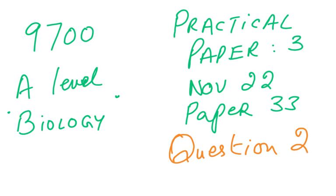Bismillah ar-Rahman ar-Rahim. We start 9700 A-level biology, another practical paper 3. This is the November 2022 paper — last year's last exam — paper 3, variant 3.3, and this is question number two which we are going to tackle in this video.